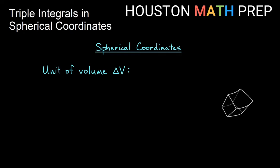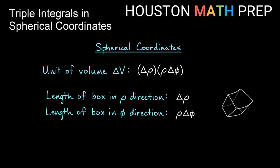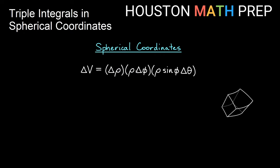You can refer to any calculus textbook for the full derivation. Briefly: the length in the rho direction is delta rho, the length in the phi direction is rho times delta phi, and the length in the theta direction is rho sine phi times delta theta. Multiplying these together gives delta rho times rho delta phi times rho sine phi delta theta, which simplifies to rho² sine phi delta rho delta phi delta theta.